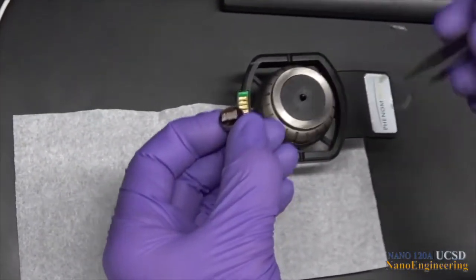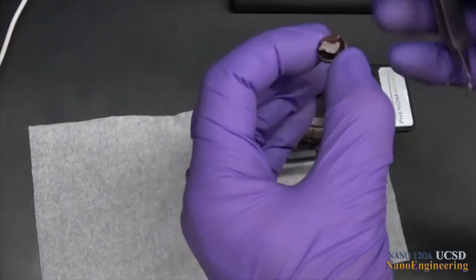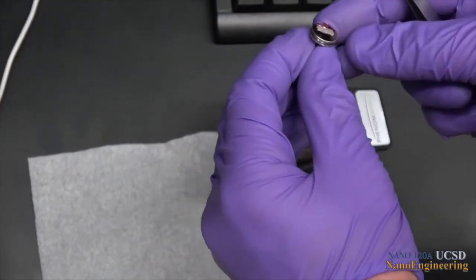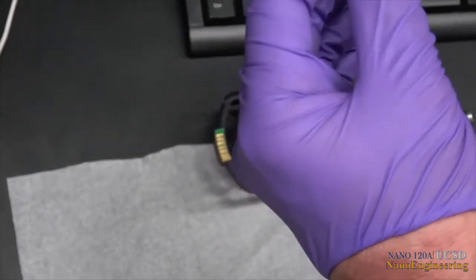Grasp the specimen mount around the sides with these special tweezers and insert the short stub into the hole in the sample holder.